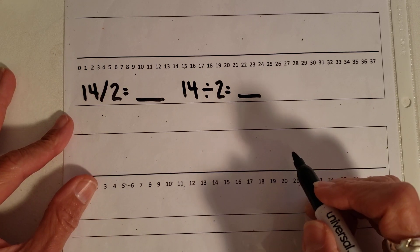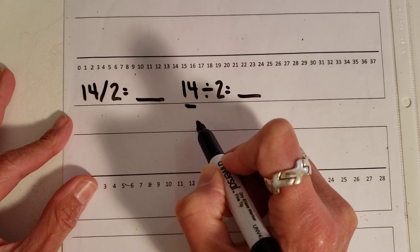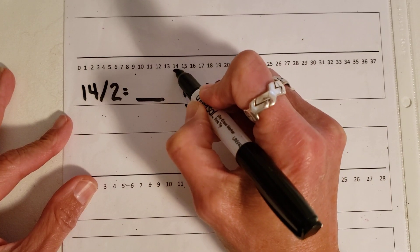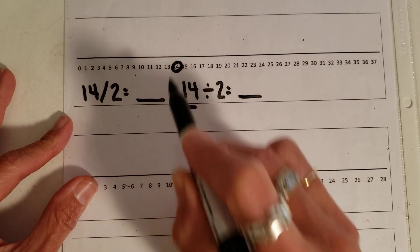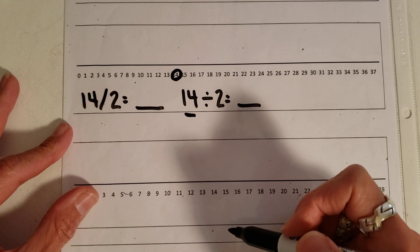All right, the first thing that I want to do is find out where I have to start. So this number right here tells me where I'm going to start. So I'm going to start at 14 right there. And you can see there's really no lines there, but that's okay because I can still do some hopping.